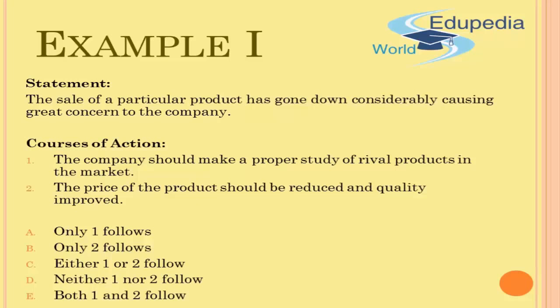The first course of action says the company should make a proper study of rival products in the market. The second course of action says the price of the product should be reduced and quality increased. Our job is to assess which of these is a valid course of action.